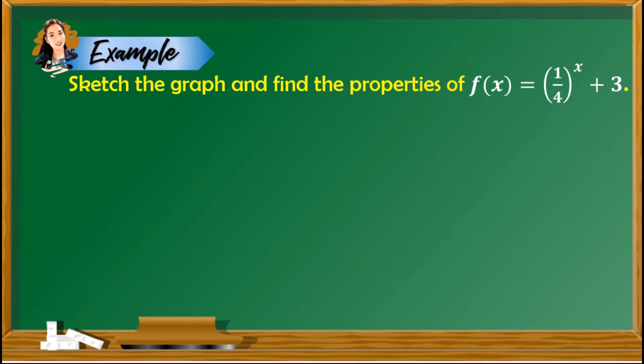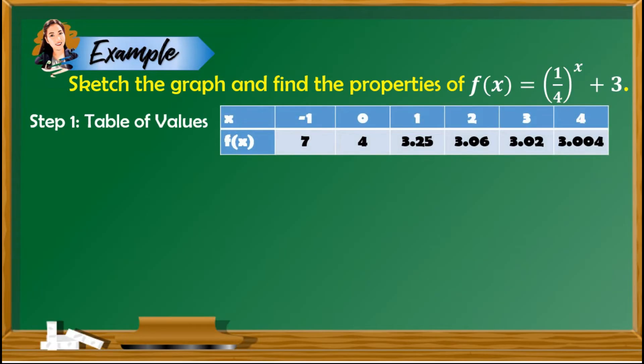Second example: sketch the graph and find the properties of f of x is equal to 1 fourth raised to x plus 3. For step one, we make a table of values using any real numbers for x: negative 1, 0, 1, 2, 3, and 4. Solving for the values of f of x by substituting each value, we get 7, 4, 3.25, 3.06, 3.02, and 3.004.